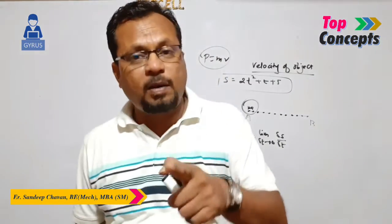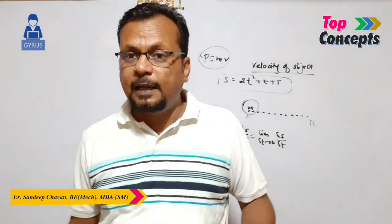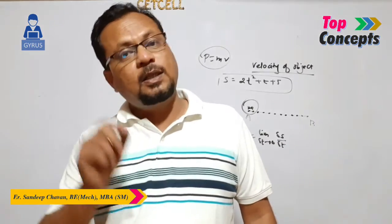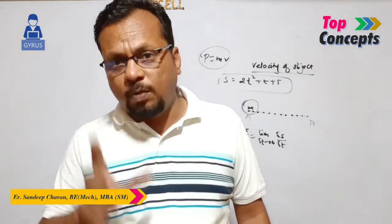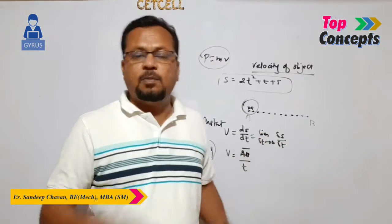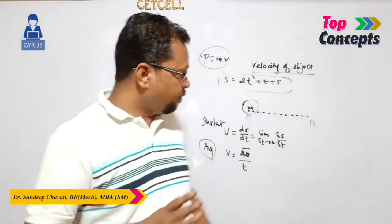If velocity remains uniform throughout the motion — constant — the motion is called constant velocity or uniform motion. If it changes, the motion is called non-uniform motion.